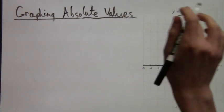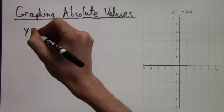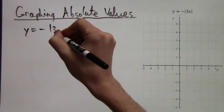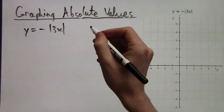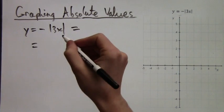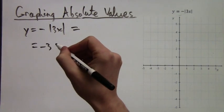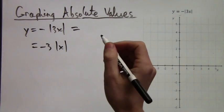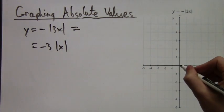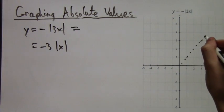y equals negative |3x|. So this example is slightly different. Because we have a 3 in front of the x, and then a negative in front of the absolute value. So the first step is, we can just factor out the 3 from outside the absolute value bars. That is allowed. So we get negative 3 times |x|.